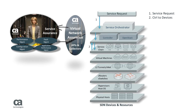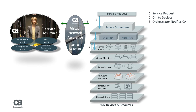CA Virtual Network Assurance is a highly scalable and flexible software gateway that bridges today's infrastructure management to the new SDN and NFV ecosystem. In step three, the SDN orchestrator can now notify the CA assurance portfolio and extend that critical visibility into complex SDN and NFV environments. You cannot manage what you don't know, and today's hourly, daily, or weekly polls for network changes will not keep up with the highly dynamic SDN environments of tomorrow.